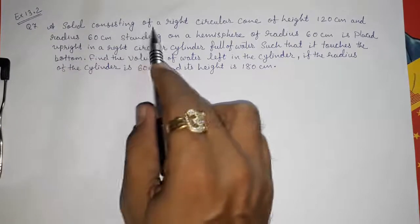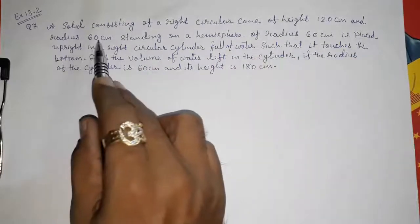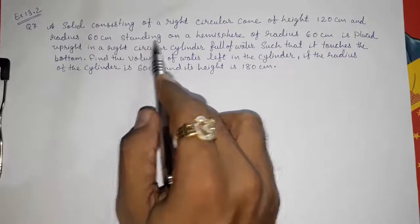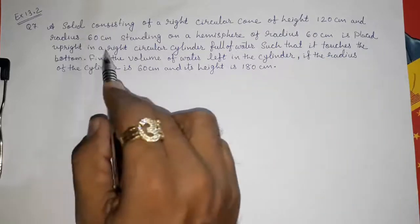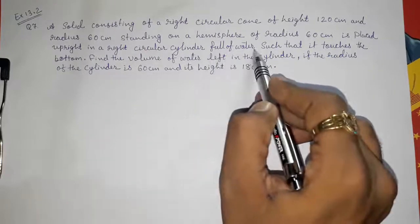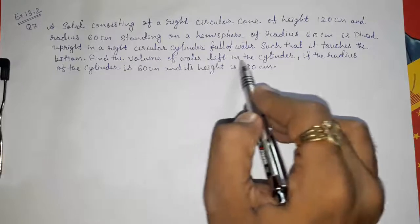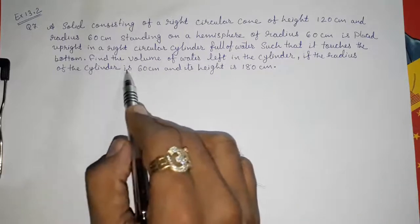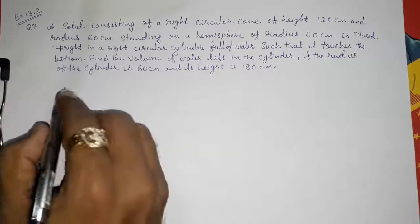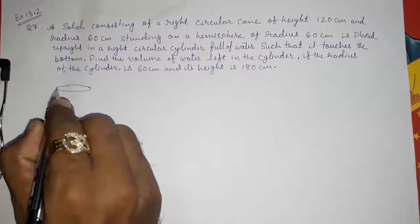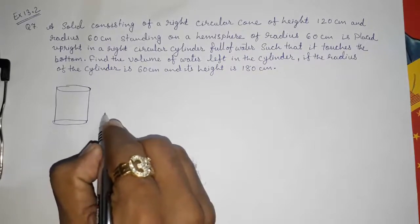A solid consisting of a right circular cone of height 120 cm and radius 60 cm standing on a hemisphere of radius 60 cm is placed upright in a right circular cylinder full of water such that it touches the bottom. Find the volume of the water left in the cylinder if the radius of the cylinder is 60 cm and its height is 180 cm.